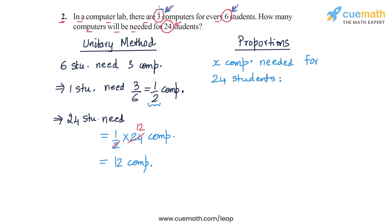So 3 is to x will be the same as 6 is to 24. So this equality of ratios gives us a proportion, and now we can easily find the value of x.